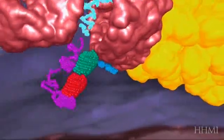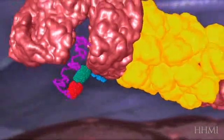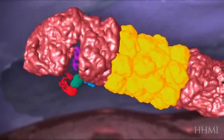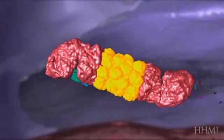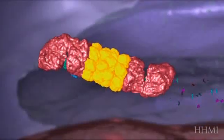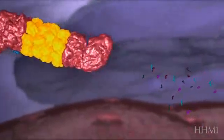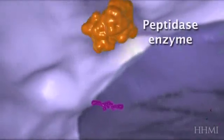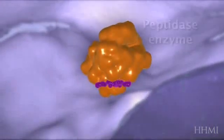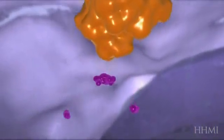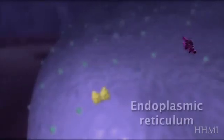The peptide chain is fed into the proteasome where it's partially digested into shorter peptide fragments. Those shorter fragments are then acted upon by additional peptidase enzymes present in the cytoplasm and broken up into even smaller peptides.